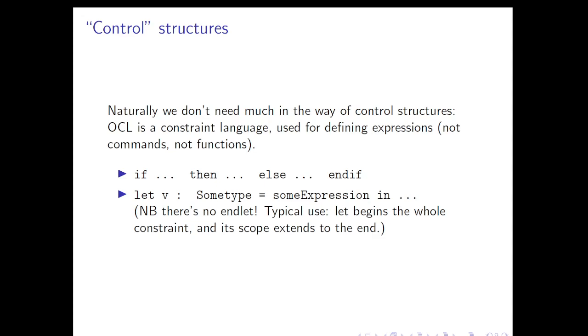We don't need much in the way of control structures because OCL is a constraint language and we're using it for defining expressions, and they'll usually be quite simple expressions. We do have if-then-else ended by endif, and this is much the same way as you may have seen it in Haskell. So this is if something happens then the value of an expression else the value of an expression. It's not then do something else do something else. And we've also got a let blah in blah piece of syntax. Surprisingly enough, there's no end let, just for convenience we don't usually need it. But that asymmetry of the syntax sometimes catches people out.